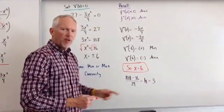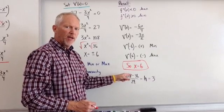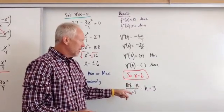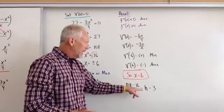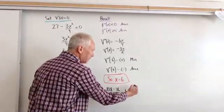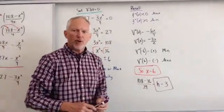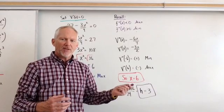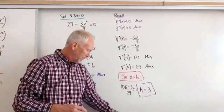We substitute that back into the equation. We want 108 minus x squared, x squared is 36, divided by 4 times x. So 108 minus 36 divided by 24 is h, and that is 3. And so now we have the dimensions of what they requested. The dimensions that will produce a maximum volume for the box is when x is equal to 6 and when the height is equal to 3.